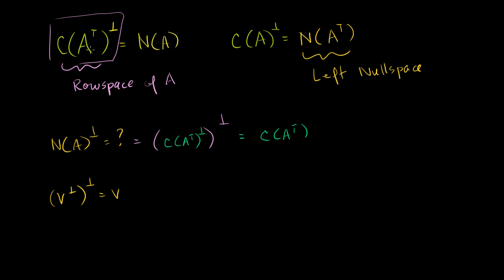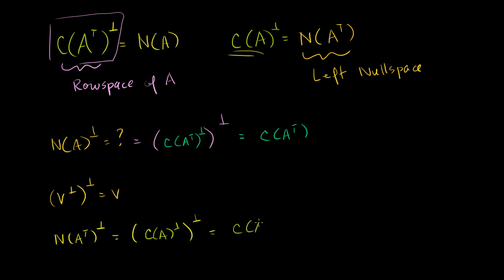So the orthogonal complement of the row space is the null space, and the orthogonal complement of the null space is the row space. We can apply that same property on this side. What is the orthogonal complement of the left null space of A? Well, this is going to be equal to the orthogonal complement of the orthogonal complement of the column space. And since taking the orthogonal complement of the orthogonal complement equals the original subspace, this is just equal to the column space of A.